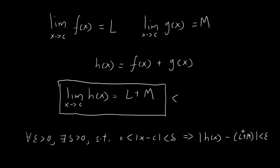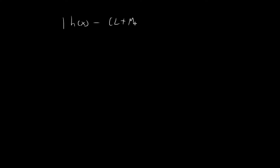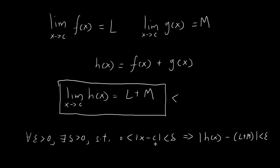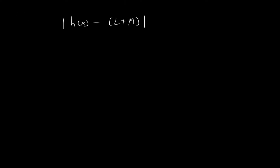In order to establish the epsilon-delta definition, I'm going to first focus on the term h of x minus l plus m. What I want to show is that I can make this term arbitrarily small, provided that x is sufficiently close to c. For whatever value of epsilon, as long as x is sufficiently close to c, this term can be made smaller than that epsilon.